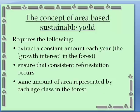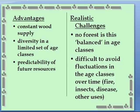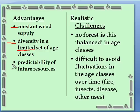The advantages of this approach, like the Christmas tree analogy, are that you have a constant supply of wood, a nice diversity of age classes — 1 to 20, 21 to 40, and so on — nicely spread out, though limited to the harvest age. It's also very predictable: you know how much you're going to get in the future because your wood supply is constant.